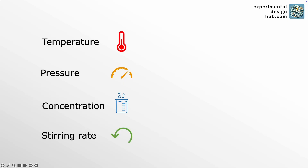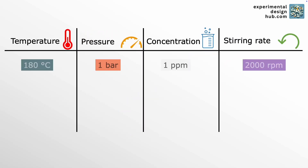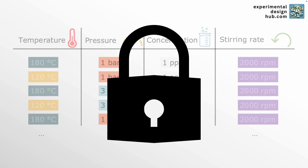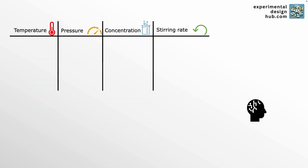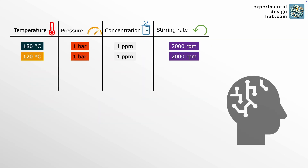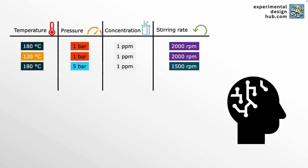Running experiments takes time, money and effort — and it's also frustratingly inefficient. You have to plan everything up front and once you start there's no adjusting based on what you've learned. But what if an algorithm could learn from each experiment, adapt in real time and guide you straight to the best solution without wasting time on unnecessary tests? Well, that's exactly what Bayesian optimization does.